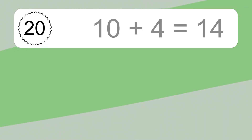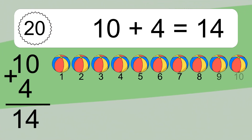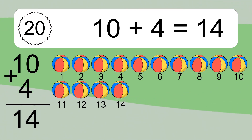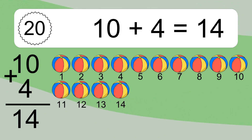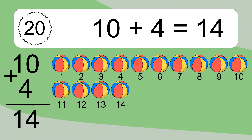10 plus 4 equals what? 10 plus 4 equals 14. Let's count it. 1, 2, 3, 4, 5, 6, 7, 8, 9, 10, 11, 12, 13, 14.